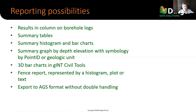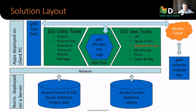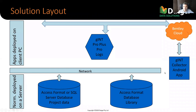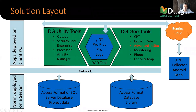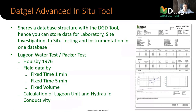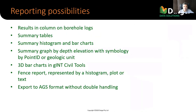Having everything in one system from the beginning will save you a significant amount of time. You could also collect the data using Gint Collector — set up the forms there to collect information in the field, and it syncs back to the office. Within a few minutes after the test, you could have the results in the office and somebody could be analyzing them.